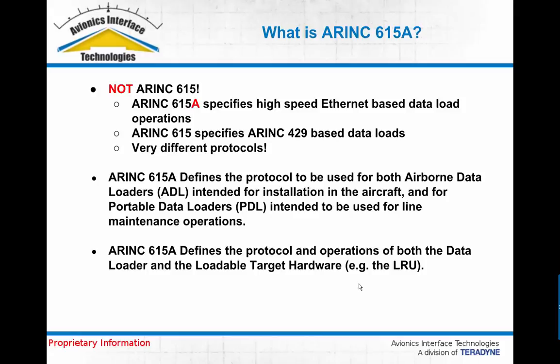ARINC 615A specifies a high-speed Ethernet-based data loader, where ARINC 615 is a preceding specification that specifies software data loads utilizing ARINC 429 for the connection between the loader and the loadable avionics system. They are completely different protocols with almost no overlap. One uses Ethernet, one uses ARINC 429, and the similarity stops with the fact that they're both used to load software from an off-board or on-board data loading system to an avionics computer.